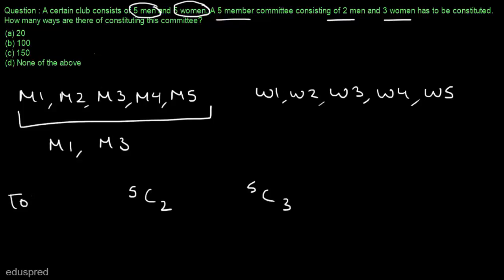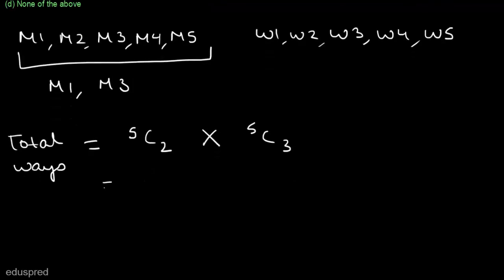So this means the total number of ways is equal to 5C2 multiplied by 5C3. And this is equal to 5 factorial divided by 2 factorial 3 factorial multiplied by 5 factorial divided by 3 factorial 2 factorial.